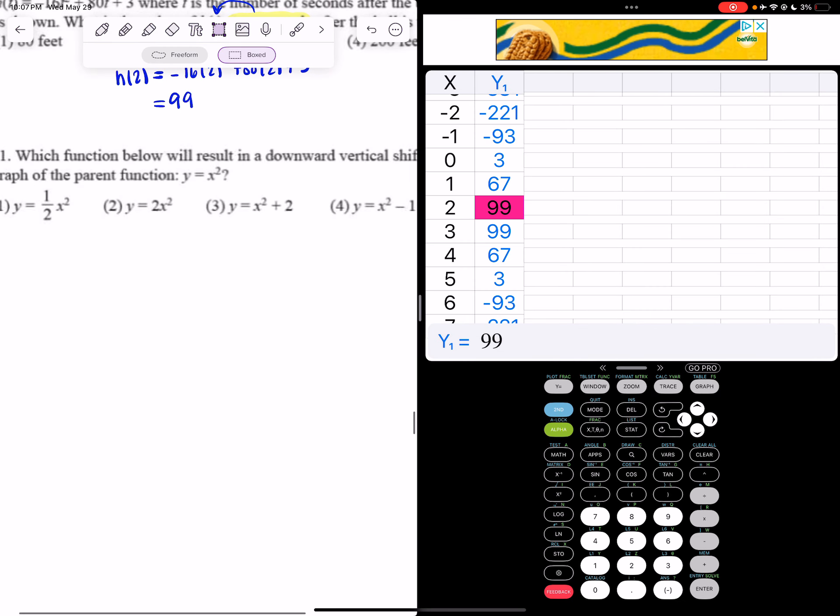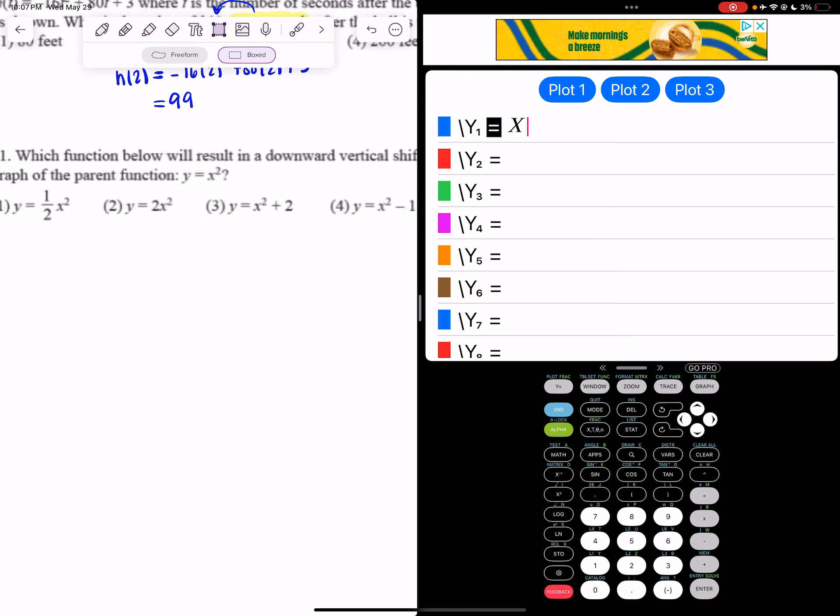So, what I'm going to do is I'm actually just going to type y equals x squared into y1, and then I'm going to type my answer choices into y2.